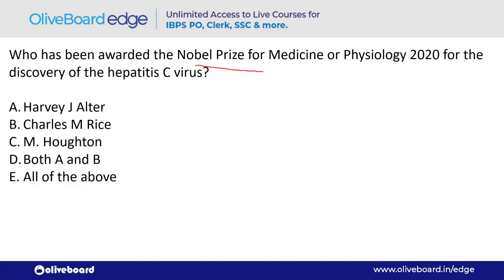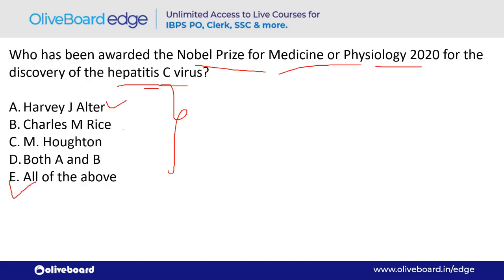Who has been awarded the Nobel Prize for Medicine or Physiology 2020 for the discovery of the Hepatitis C virus? The answer is all of the above — Harvey J. Alter, Charles M. Rice, and Michael Houghton.